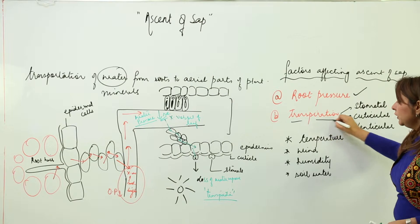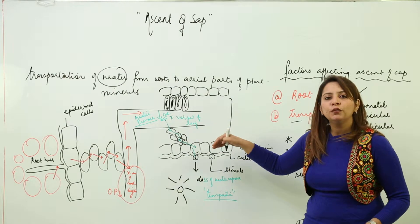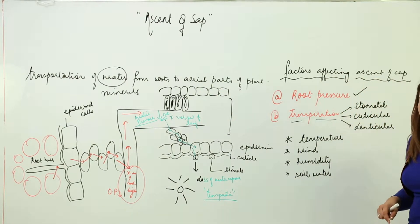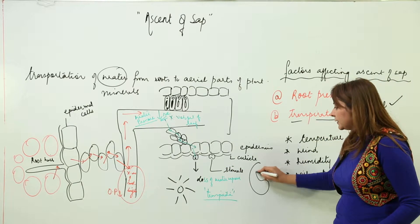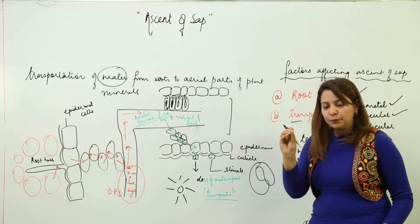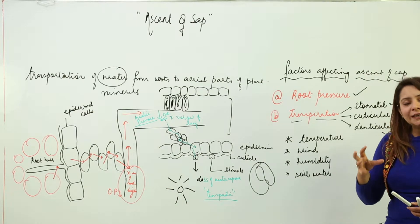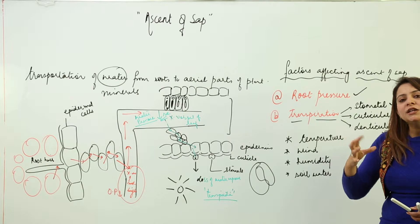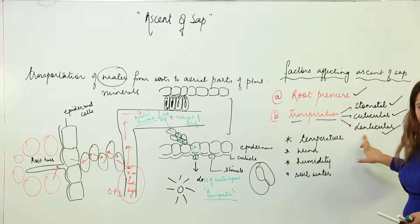The second factor is transpiration. More transpiration means more loss of water vapor from stomatal pores, which leads to more absorption of water, greatly favoring the ascent of sap. Transpiration can occur in three ways: through stomata, which are pores enclosed by kidney-shaped guard cells; through the cuticle, which has tiny pores; and through lenticels, which are small pore-like structures in woody stems meant for gaseous exchange.